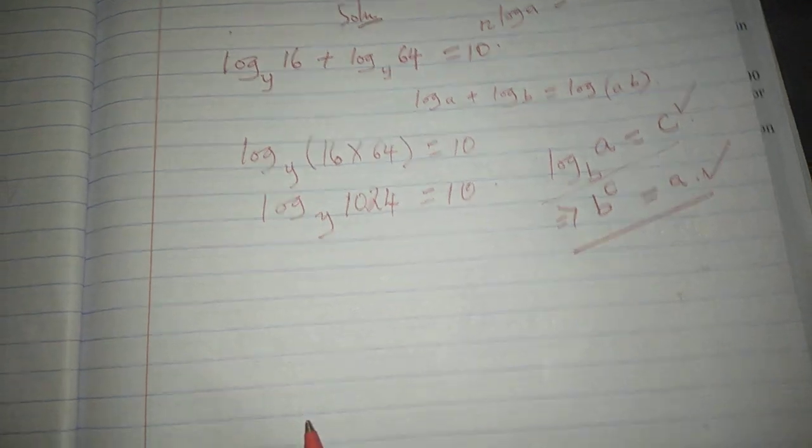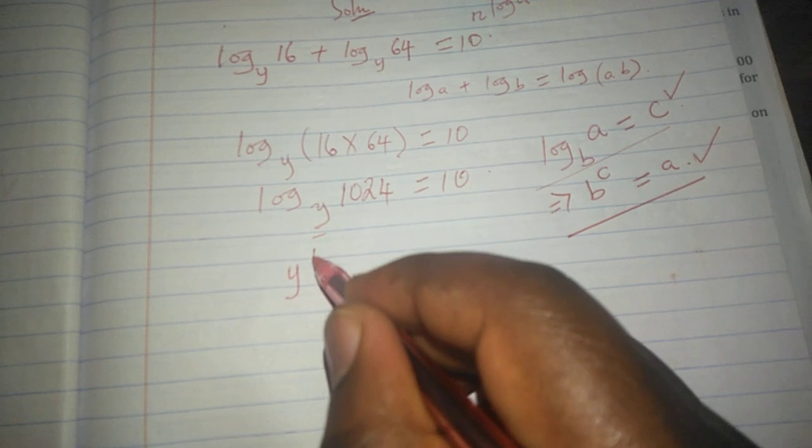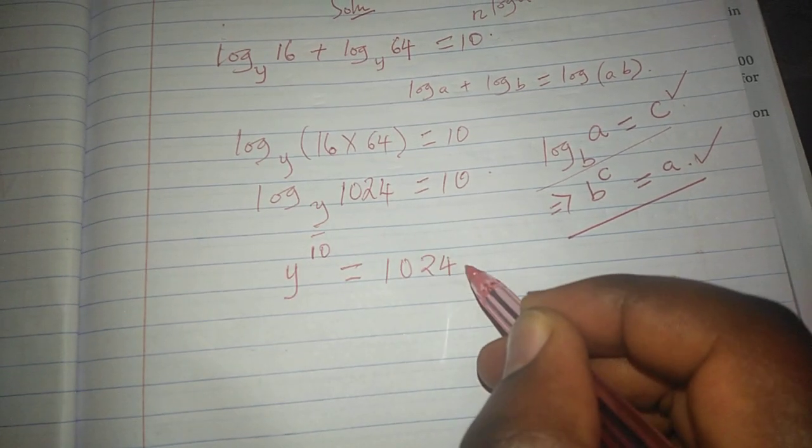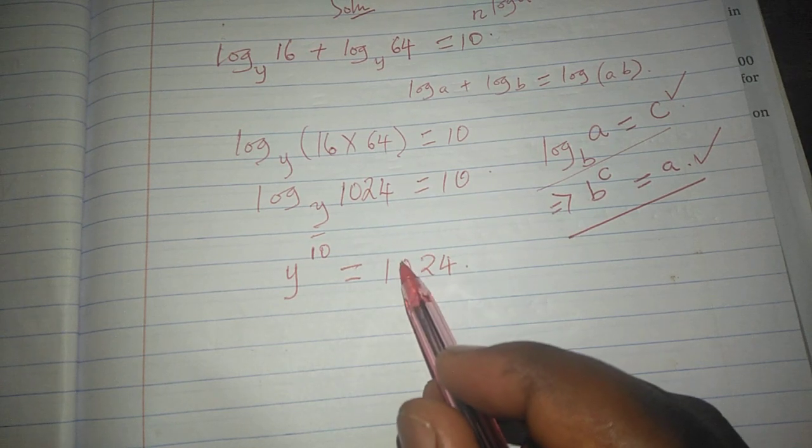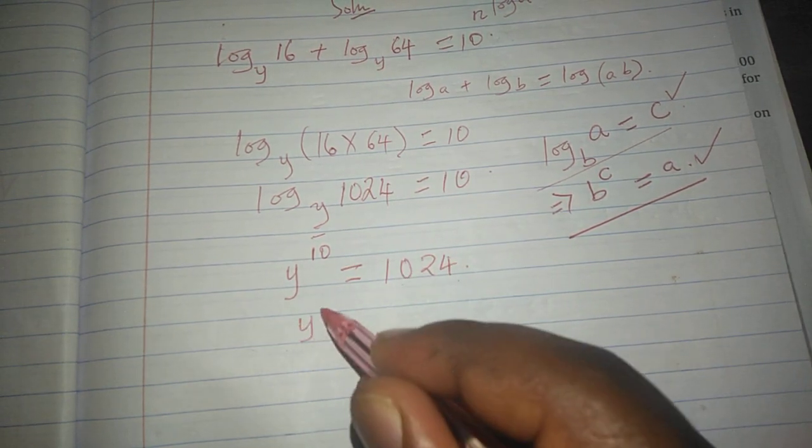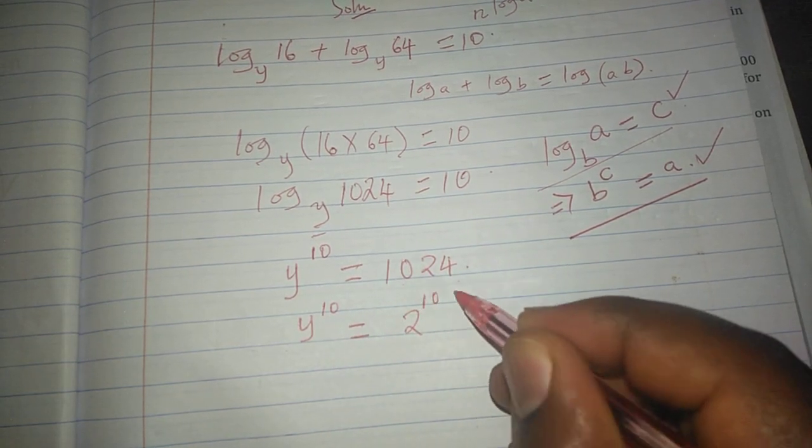And changing the one we have here, then we can say y raised to 10 should give us 1024. We can express 1024 to its simplest base, and this would be y raised to 10 equals to 2 raised to power 10.